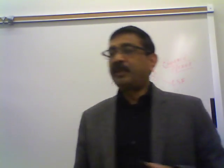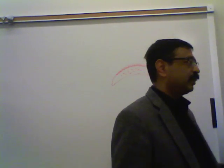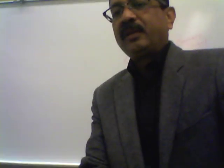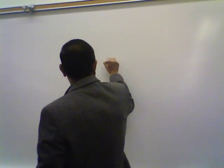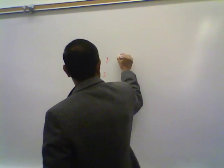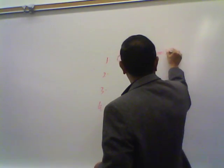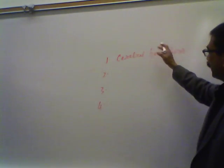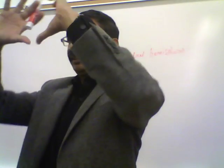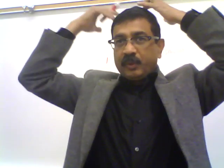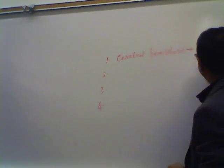The brain has four parts: cerebral hemispheres, diencephalon, brainstem, and cerebellum. The cerebrum is formed by the cerebral hemispheres — we have two cerebral hemispheres. 'Hemi' means half, so we have two halves. These two together form the sphere, which is called the cerebrum.